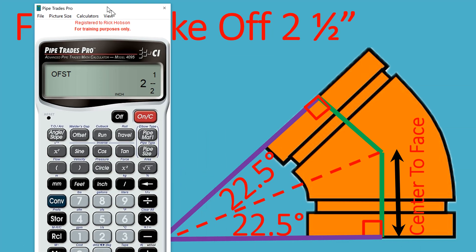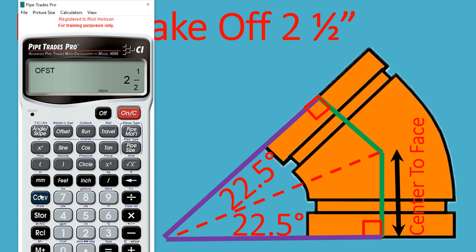So if we take our Pipe Trades Pro and we convert clear, we can put 6 inches in as the run. 22.5 is the angle slope. When we press the offset, we get 2.5 inches. Keep in mind, we had one side, one angle, enabling us to find all the sides and all the angles in that triangle.